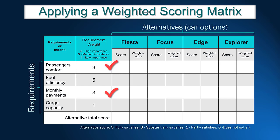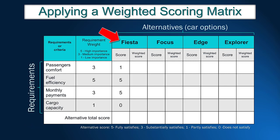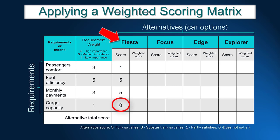That means they have intermediate importance in the final decision. In the following step, we need to evaluate each alternative on each requirement. Let's start with the first alternative, Ford Fiesta. John thinks that this car only partially satisfies the comfort requirement, so Fiesta receives score 1. In terms of fuel efficiency and payment, Fiesta receives the highest score of 5, because it is the cheapest and has the best fuel efficiency. For cargo capacity, Fiesta does not satisfy the needs and receives score 0 on this requirement.